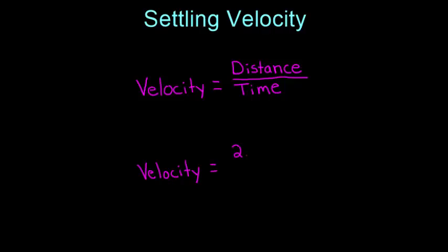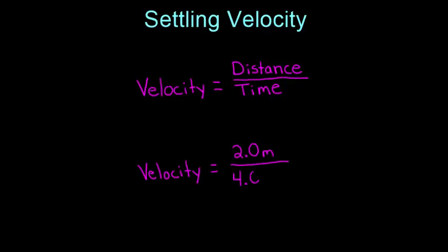Learners can then calculate the settling velocity of the cotton in meters per second using the equation velocity equals distance over time. Using this equation, if a piece of cotton fell two meters in four seconds, then the settling velocity would be 0.50 meters per second.